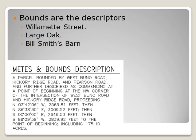In metes and bounds, the metes are the distance and the direction, and the bounds are the descriptors. For example: 30 degrees north of east on Willamette Street. Here's a sample metes and bounds description: a parcel bounded on the west by Bruno Road, with exact bearings like north 30 degrees 42 minutes 6 seconds west, a specified number of feet, and then north 86 degrees 38 minutes 35 seconds east. It is a very detailed, particular land description system.